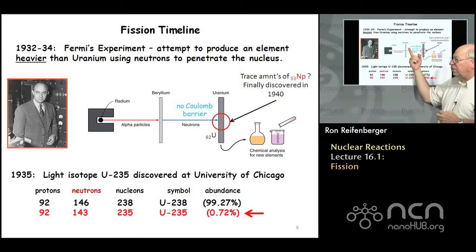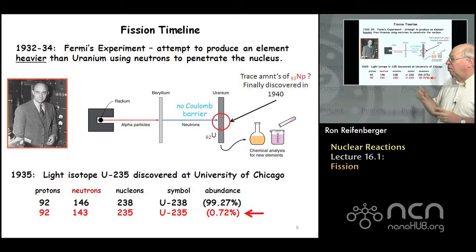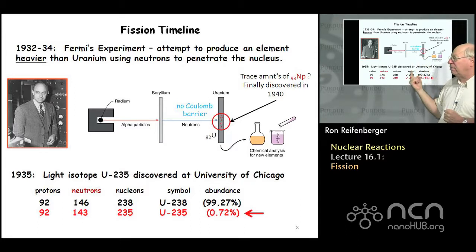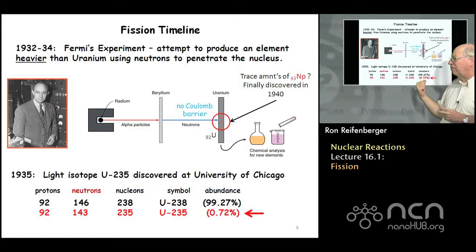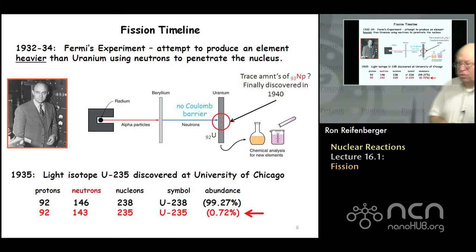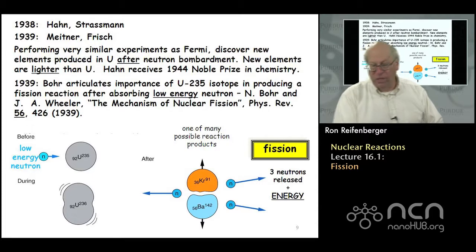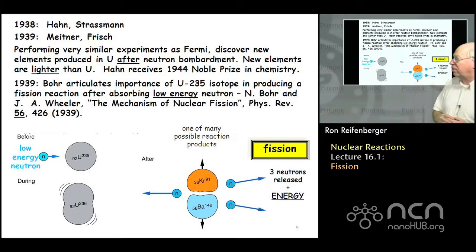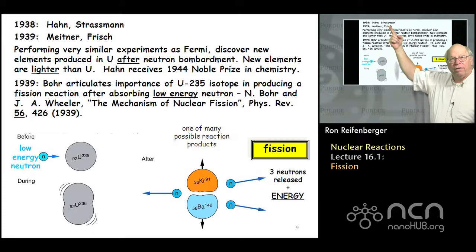A couple of years after Fermi's experiments, the U-235 isotope was discovered at the University of Chicago in 1935. Fermi's team had assumed uranium was 100% U-238, but that picture changed when it was found that about three-quarters of a percent of naturally occurring uranium is the U-235 isotope. Fermi's experiments were essentially repeated in 1938 by Hahn and Strassmann in Germany, and in 1939 by Meitner, who had left Germany and began working with Frisch in Copenhagen.